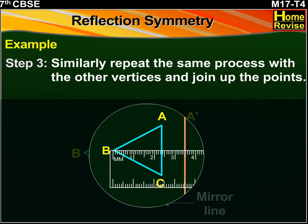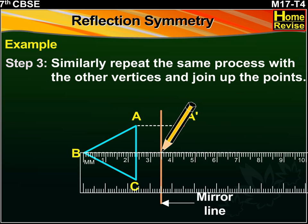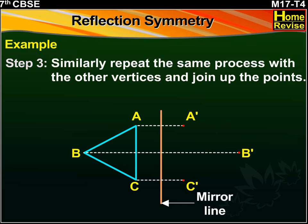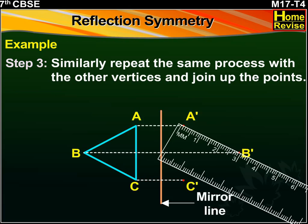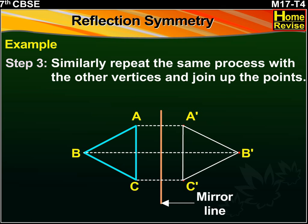Similarly, we will repeat the same process with the other vertices, i.e. B and C. The points obtained are B' and C'. Now, join the points A', B' and C'. Thus, a symmetrical figure is obtained about the mirror line.